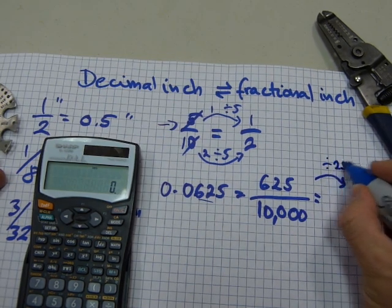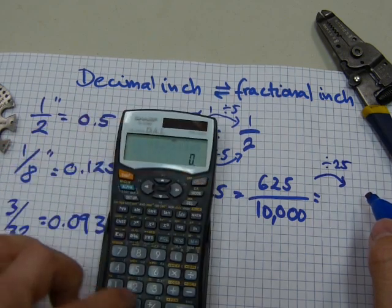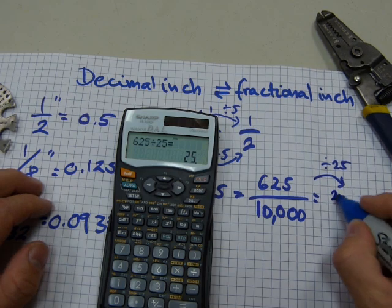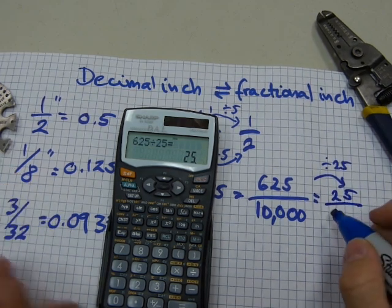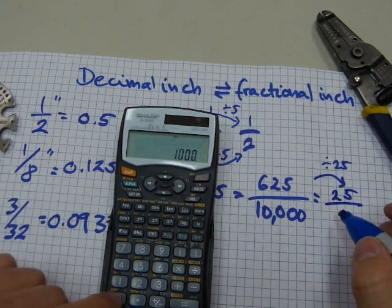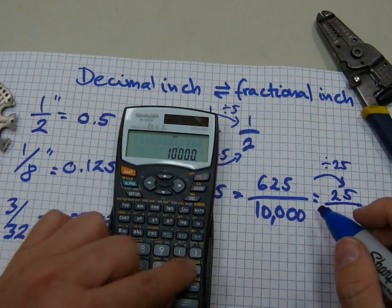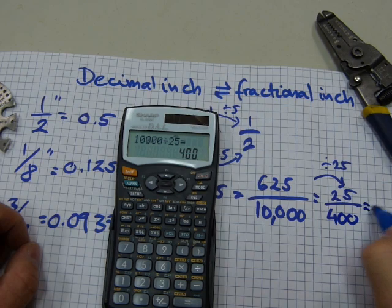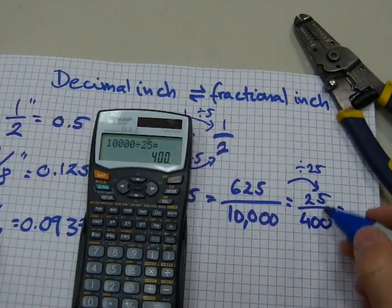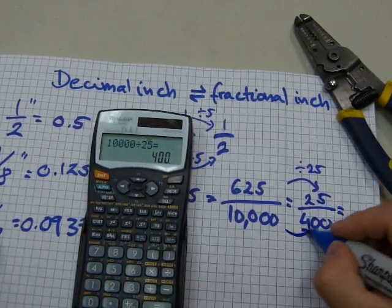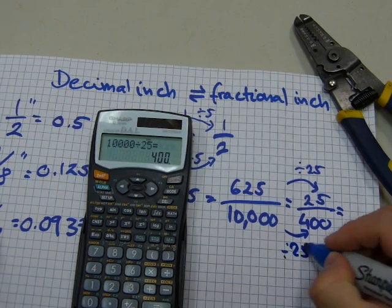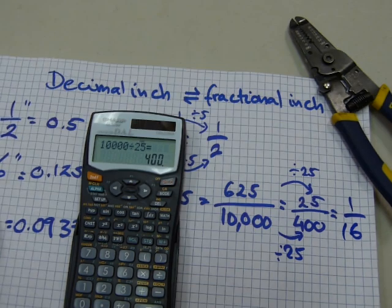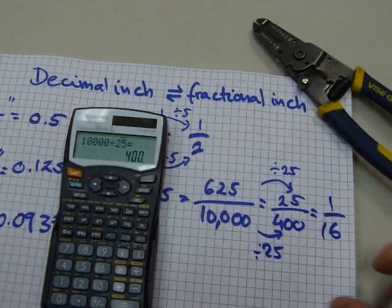625 ends in 25 so it is divisible by 25. If I reduce this by a factor of 25, I get 625 divided by 25 which equals 25. And if I reduce the 10,000 by a factor of 25 I get 400. And if I further reduce these numbers by another factor of 25 yet again, I'm gonna get 1/16 out of it. I'll spare you the writing.